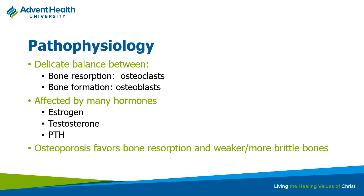There's a delicate balance between laying down and resorbing bone. Osteoclasts break down bone; osteoblasts lay down bone. Normally estrogen has a strong stimulatory effect on osteoblasts while inhibiting osteoclasts. Parathyroid hormone stimulates osteoclast activity to break up bone and release calcium. Testosterone and estrogen all play important roles in this balance.